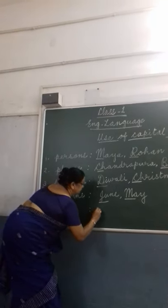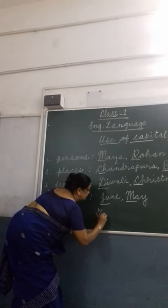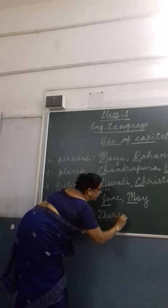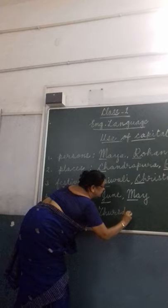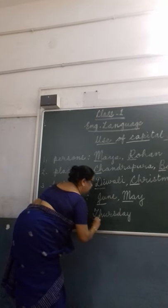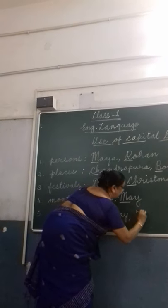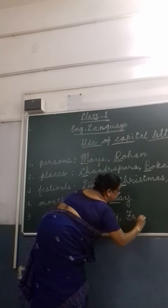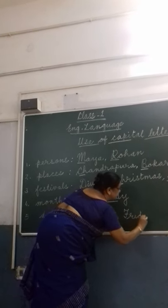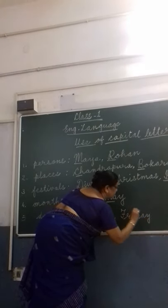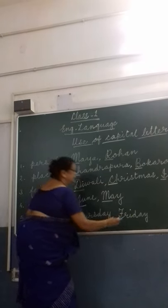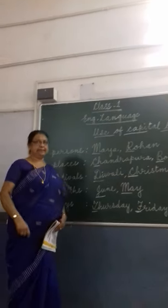And today is Thursday — so when we write Thursday, the first letter T should be capital. Then tomorrow will be Friday, so we write F as capital. Like this, whenever you write the names of days, always use the first letter as capital.